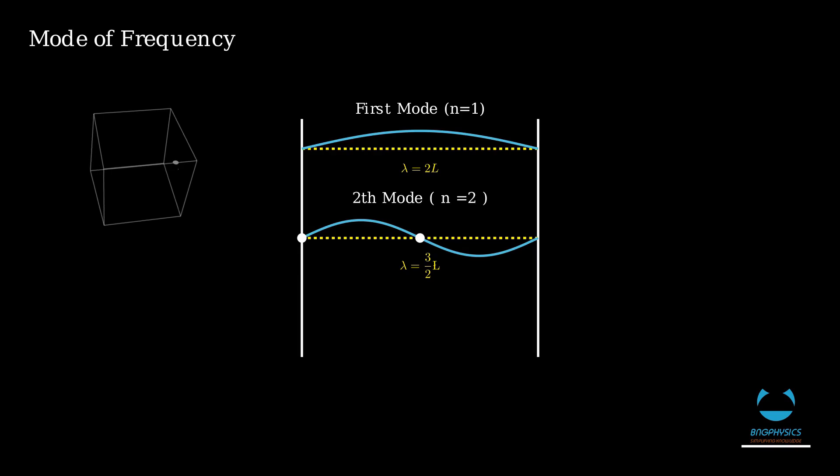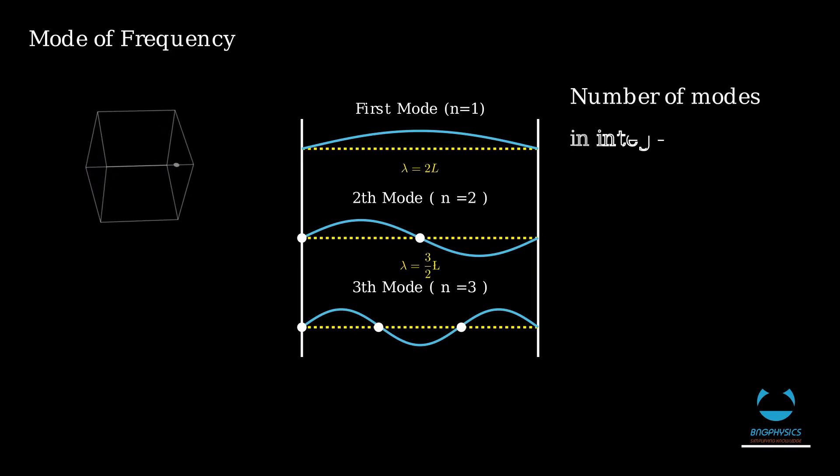For the third mode where n equals 3, we have three nodes: one where the rope is connected and two where the wave amplitude is zero. Here we have higher energy because the frequency is increased. So we notice that the first energy level or the first mode where n equals 1 has the lowest energy level. And the number of modes only comes in integer multiples: 1, 2, 3, 4 to infinity actually. We can fit an infinite number of waves in a cavity blackbody. So the number of modes is integer multiples.